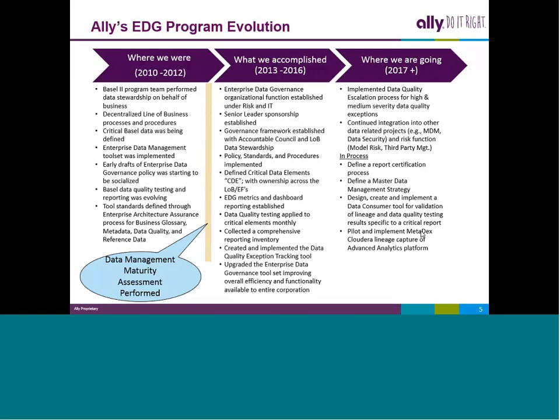We took that information along with what we saw in regulations and from an internal control framework, and created the data governance policy we have today. After those scores came out, we compared them to an industry benchmark. In 2013 we deployed the policy, the framework, the toolset, the methodology, and rolled out all the roles and responsibilities. We got our first critical data element initiatives off the ground, and over the last three years accumulated over 2,000 data elements that we consider critical.